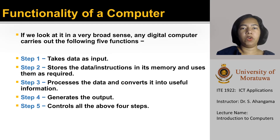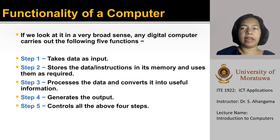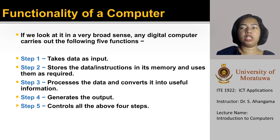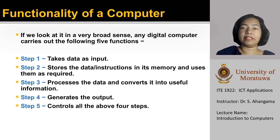Now, we have got a basic understanding of what a computer is, and also we learned about the difference between data and information. Next, we need to understand the functionality of a computer. If we look at it in a very broad sense, any digital computer carries out the following five functions. The first step takes data as input.